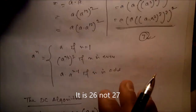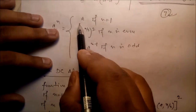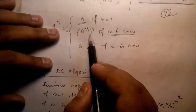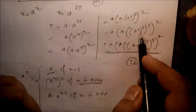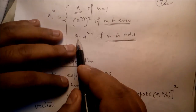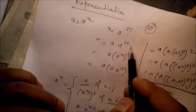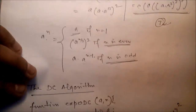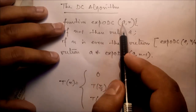We can define the recurrence: if n equals 1, return the simple value a. If n is even, compute a^(n/2) squared. If n is odd, compute a times a^(n-1). For example, 27 is odd, so we compute a times a^(27-1) = a times a^26.